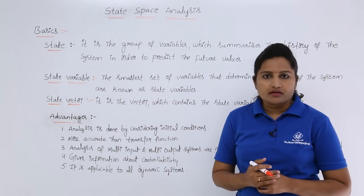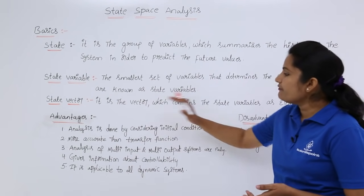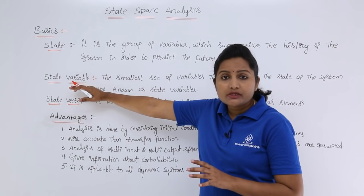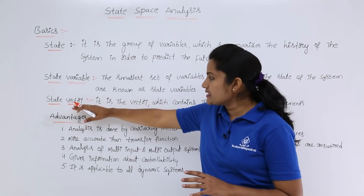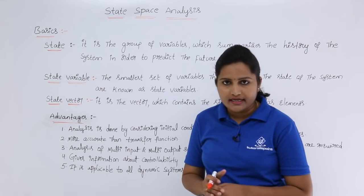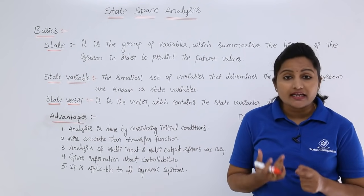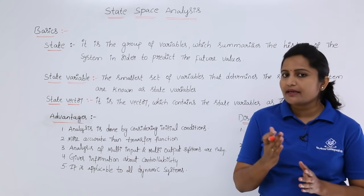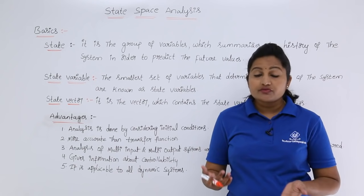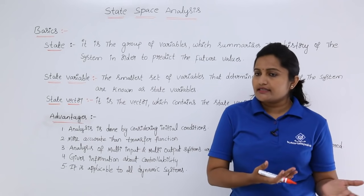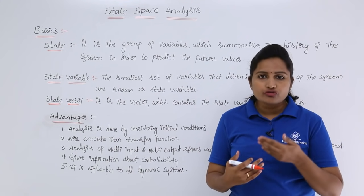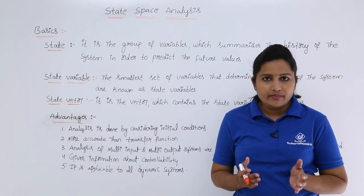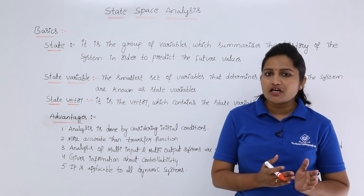Now we will get into state vector. What is meant by a state vector? It is the vector which contains the state variables as elements. If a vector contains state variables as its elements, then we can say that is a state vector. For example, the initial voltage of a capacitor and the initial current in an inductor are state variables. If you have those two variables in a vector, that is a state vector.